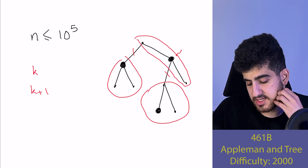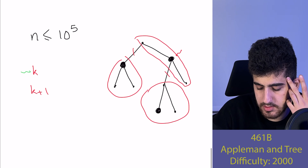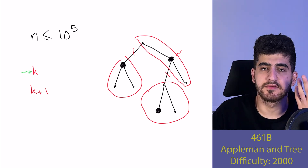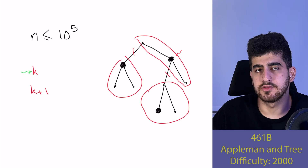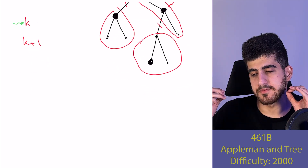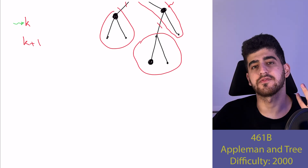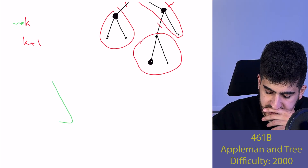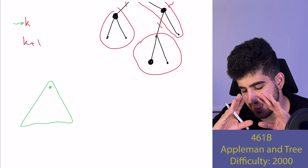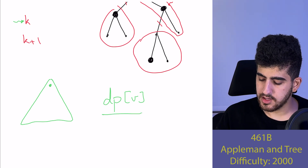The first thing we can note is that k should equal the number of black vertices minus one, though we don't use this much directly. In this problem, the important technique is to apply dynamic programming on a tree: for each vertex v, we solve the problem within its own subtree.